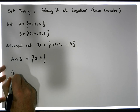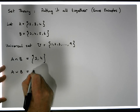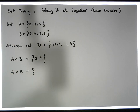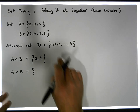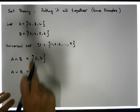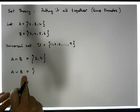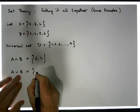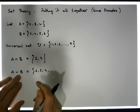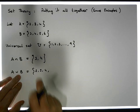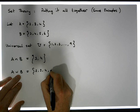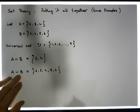What about their union? A union B is a new set. The union contains all the values that are in A or in B. So the union is going to contain everything that's in A, which is 2, 3, and 4. And we throw in everything that's in B — 3 and 4 are already listed, so we don't need to list them again — and we throw in 5 and 6.